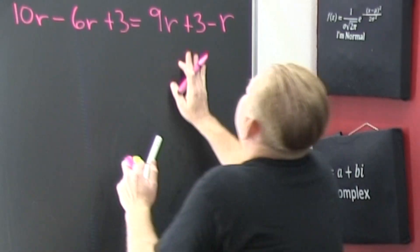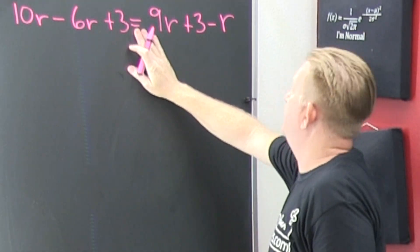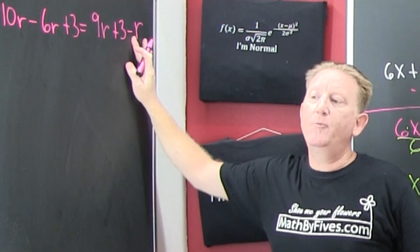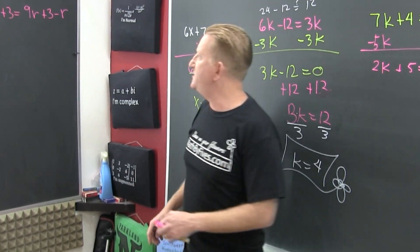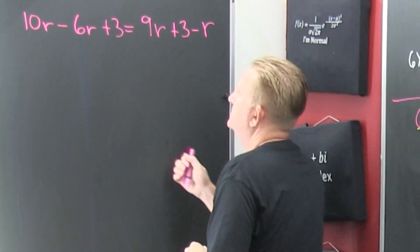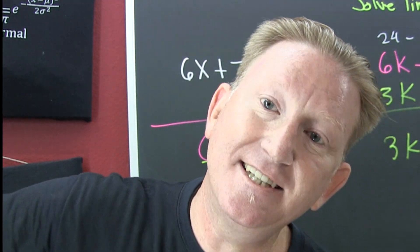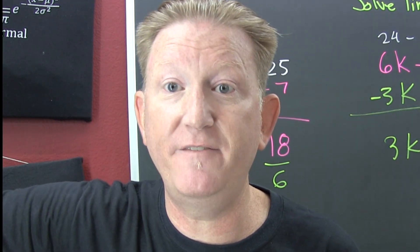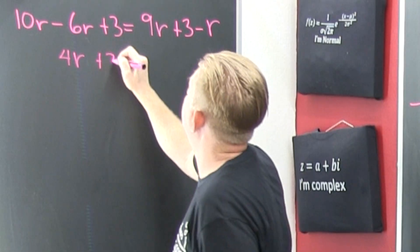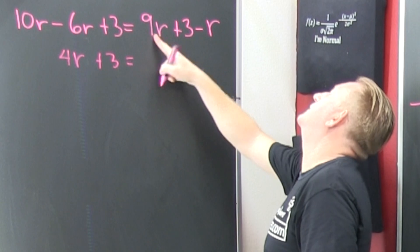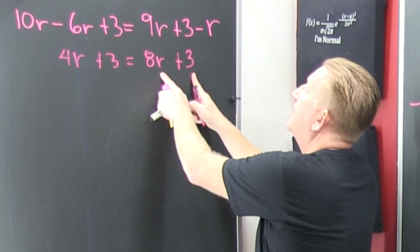We have 10r minus 6r plus 3 on one side, and 9r plus 3 minus r on the other. That gives us an opportunity to do that first step: simplify each side. Combine like terms — like terms are terms with exactly the same variables raised to exactly the same powers. So 10 minus 6 is 4r, plus 3. And on the right side, 9r minus r is 8r, plus 3. I can't combine those since they're not alike.